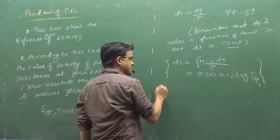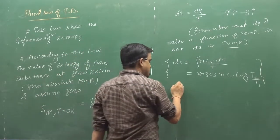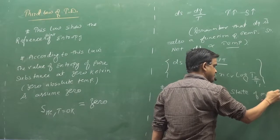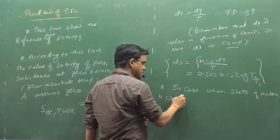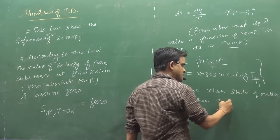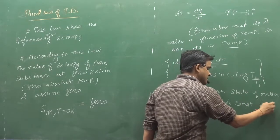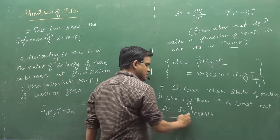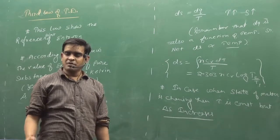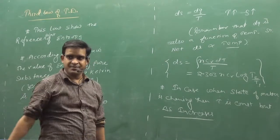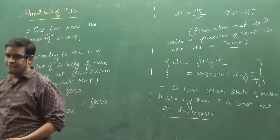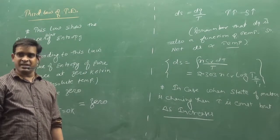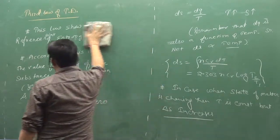Entropy will also increase when there is a phase or state change. When the state of matter is changing, the temperature is constant but delta S increases. You are giving dQ but temperature is not rising because the whole heat is changing the state, and the entropy change will be very rapid.